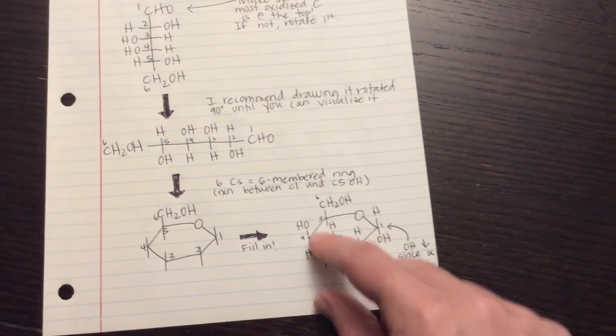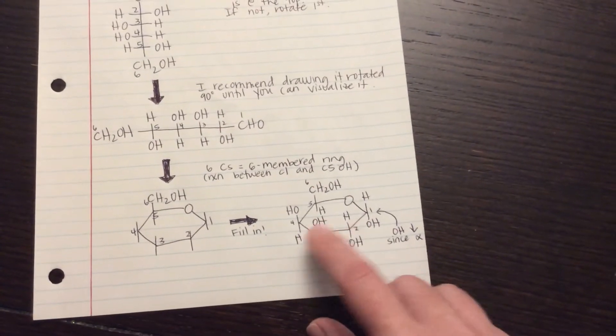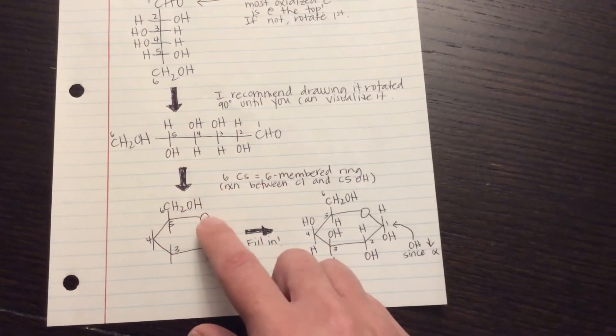So carbons 2, 3, and 4 come straight from what your sticks up here look like. H up, OH up, OH up.